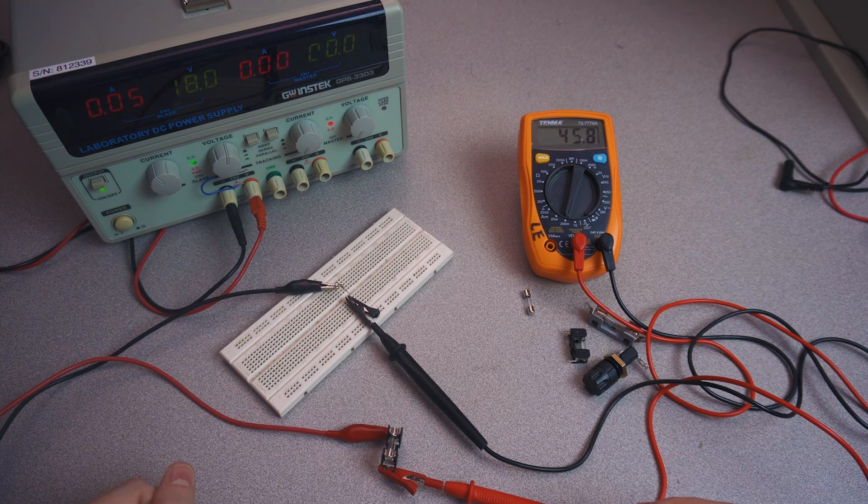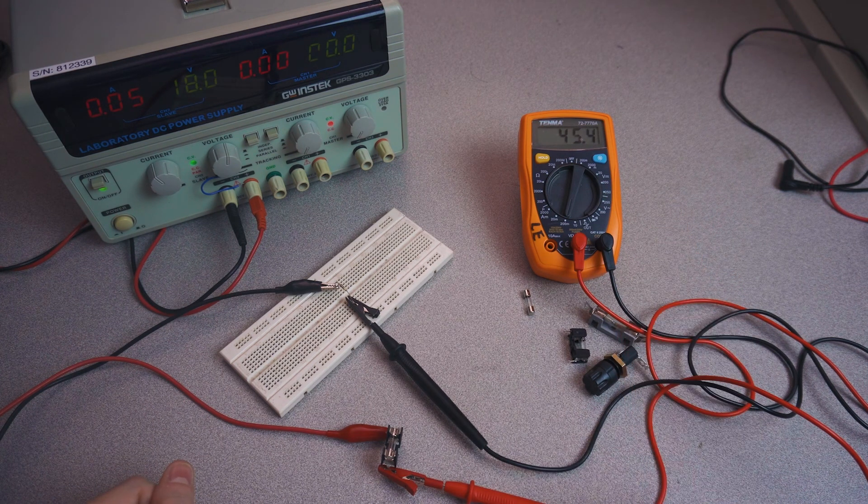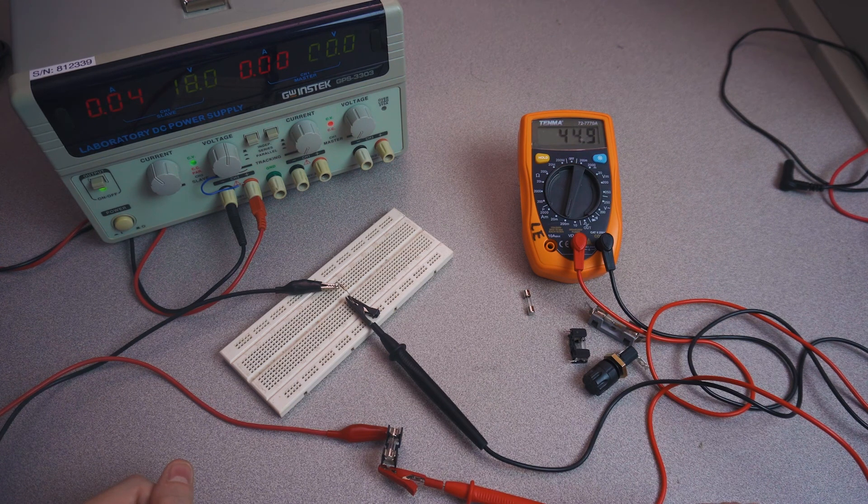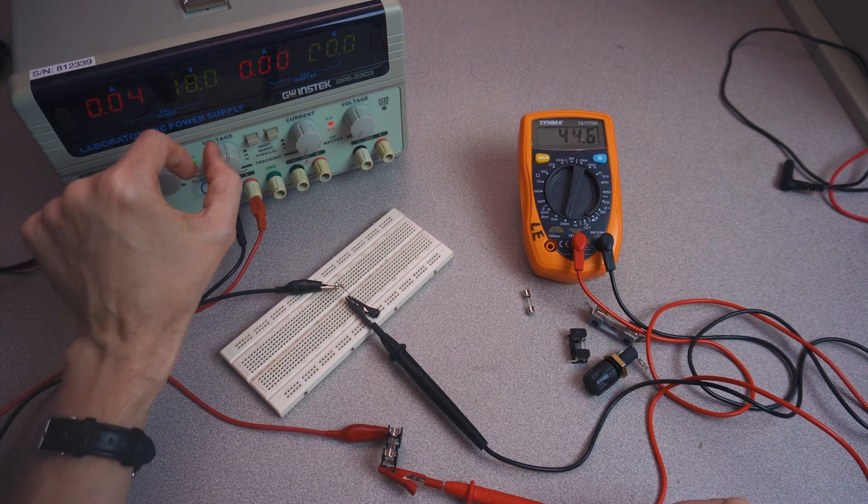The reason why the current level is dropping is because the resistance of the fuse depends a little bit on temperature, and the fuse is now hotter than it was when I first started flowing current into it.